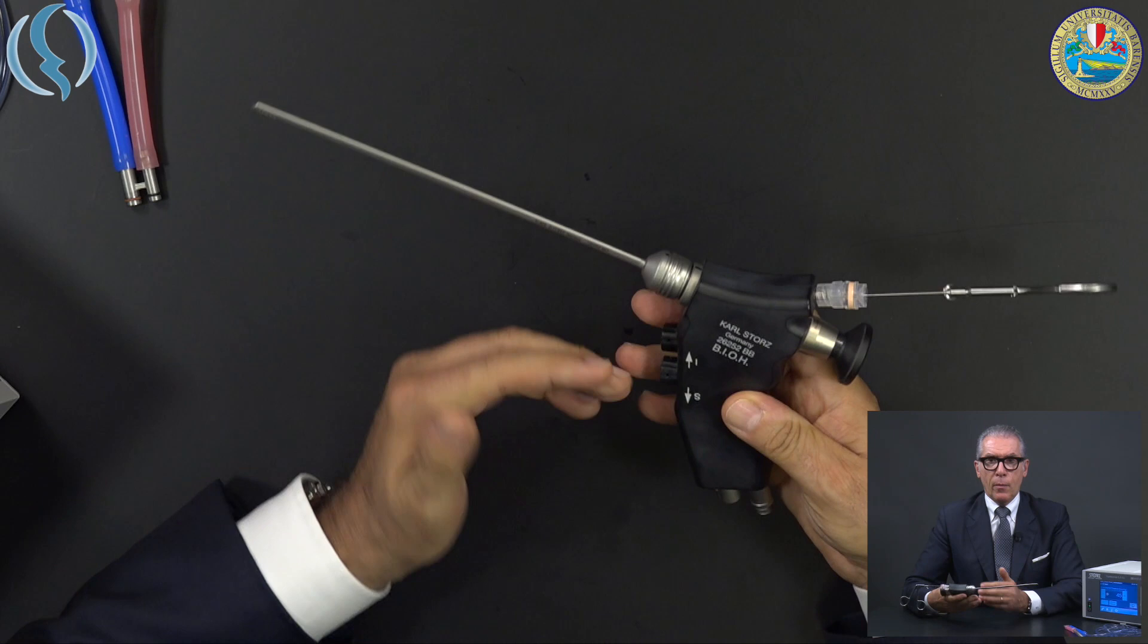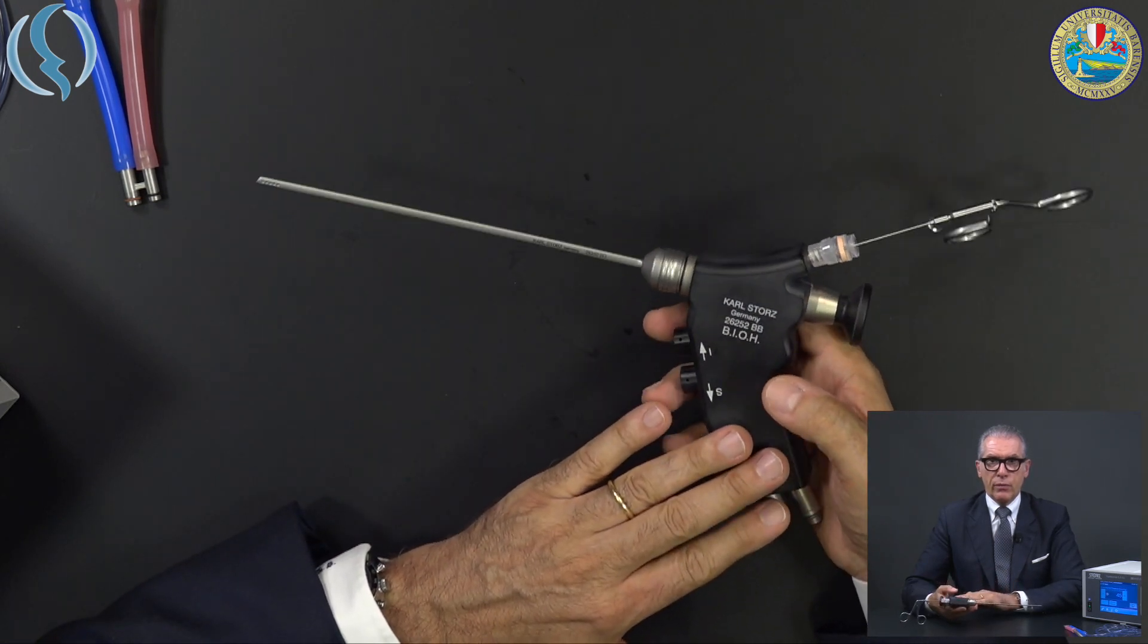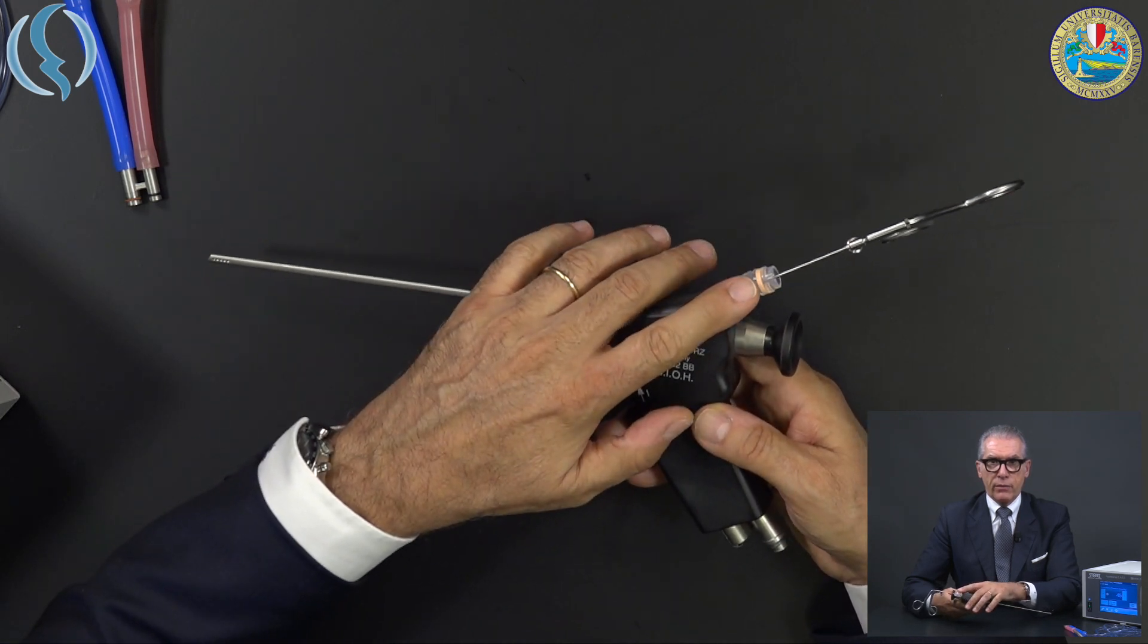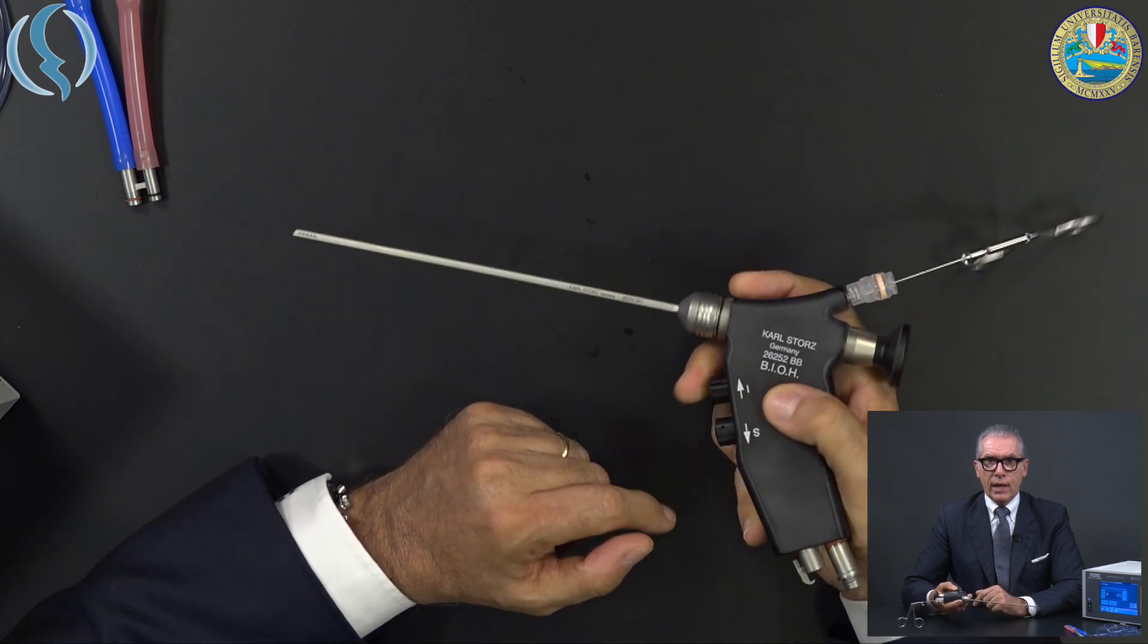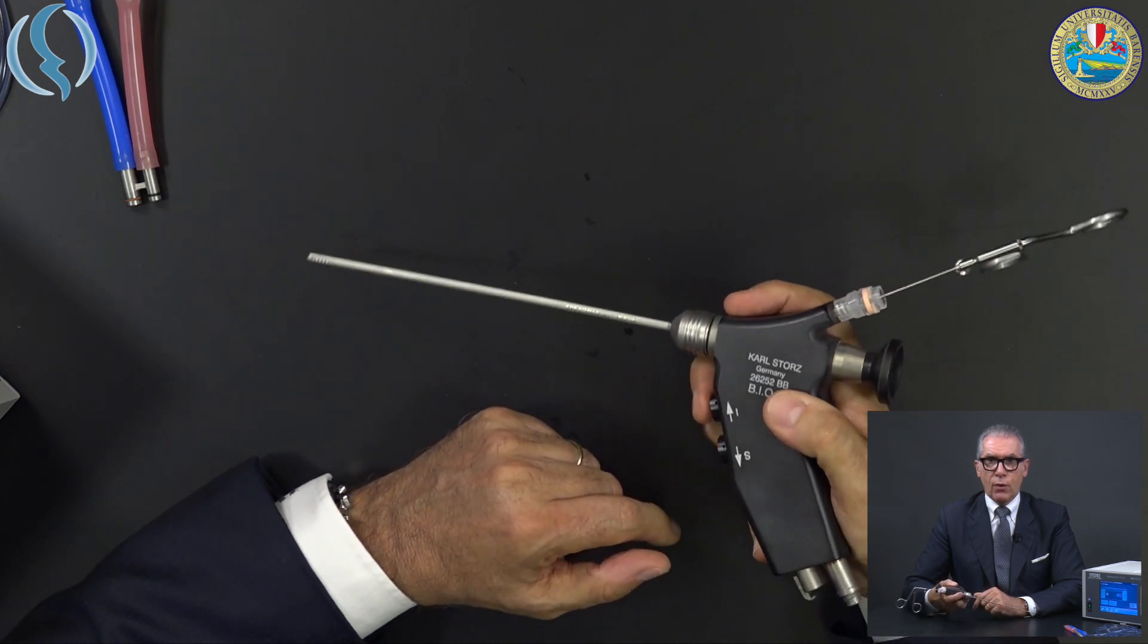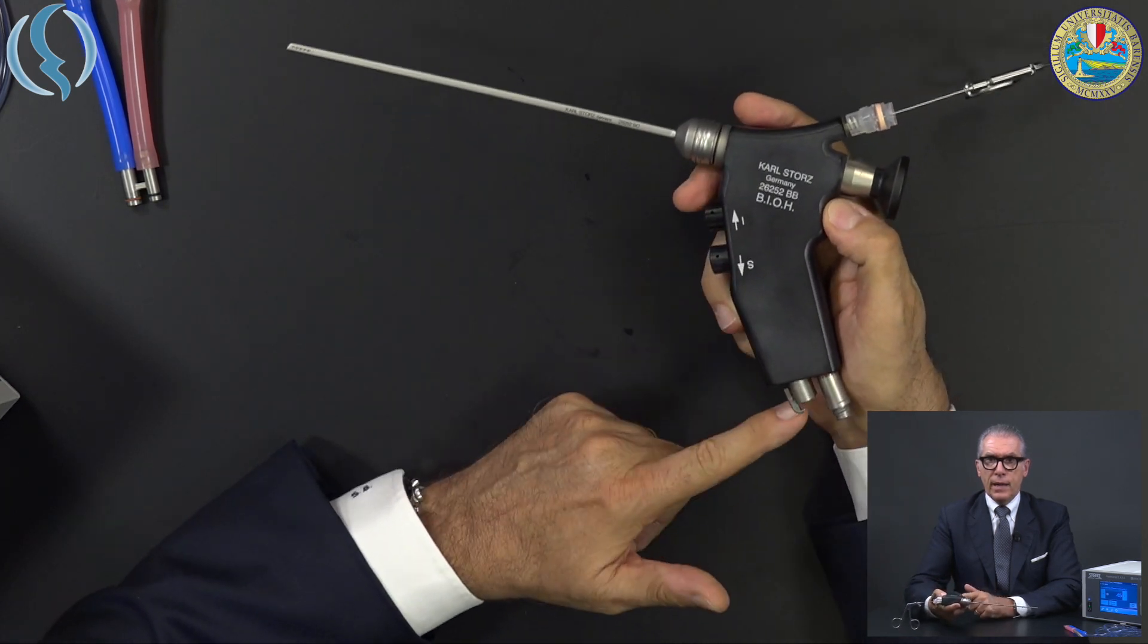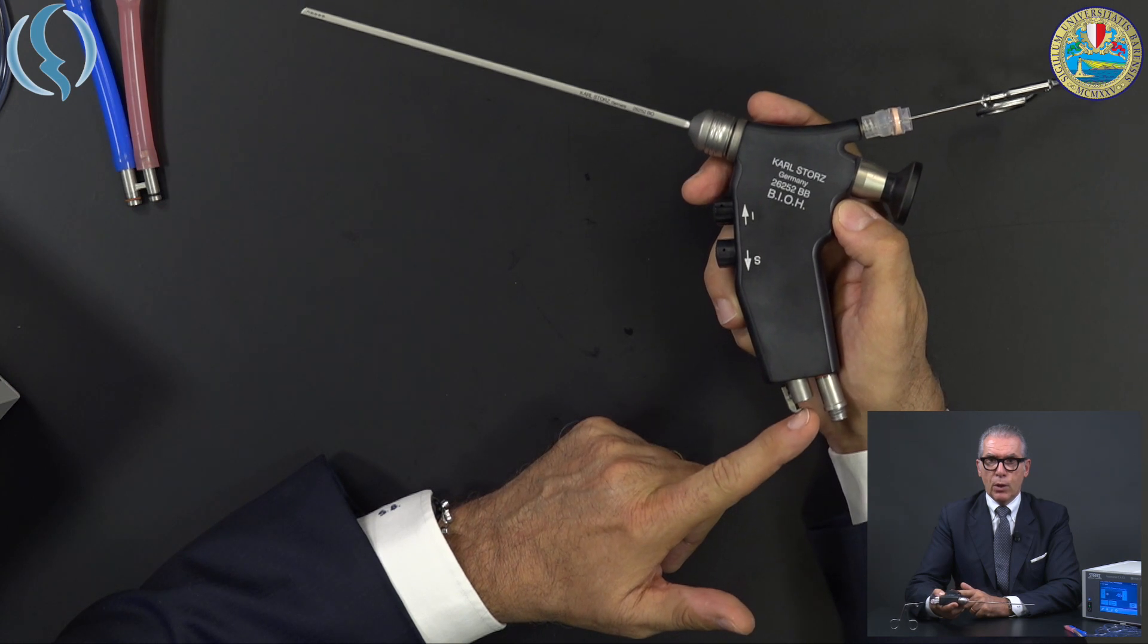A handle where I concentrate all the connections that usually in the previous scope were around the sheath and around the operative channel. We have first the two valves that control the inflow and the outflow here. And this is the light cable connection and this is the so-called monoblock connector.